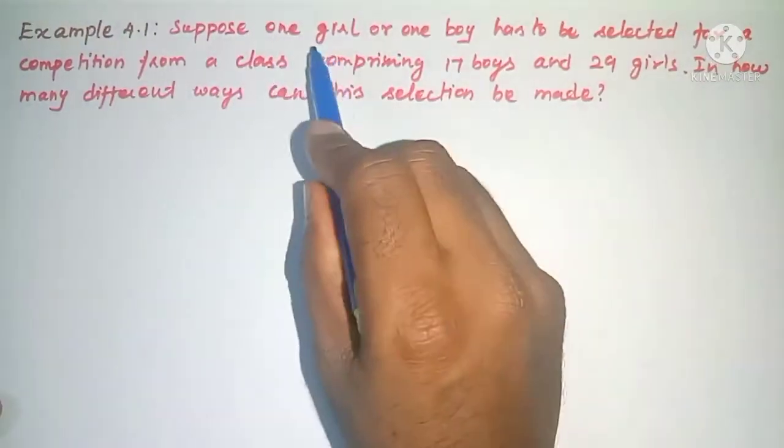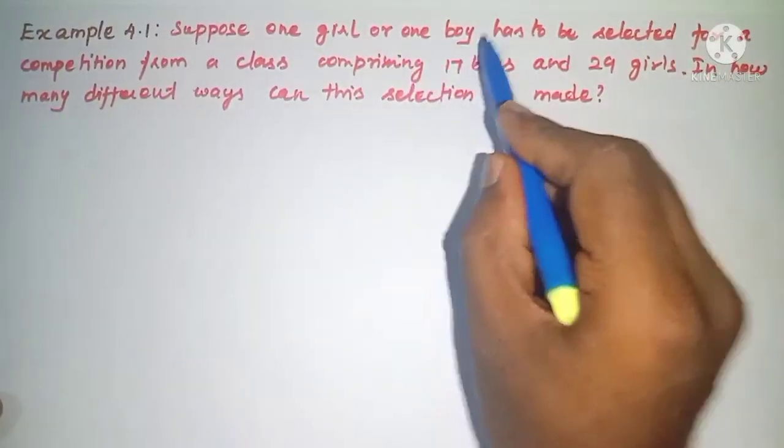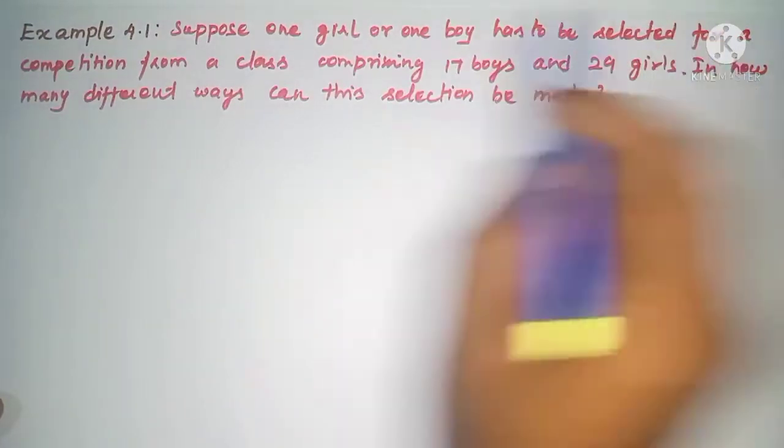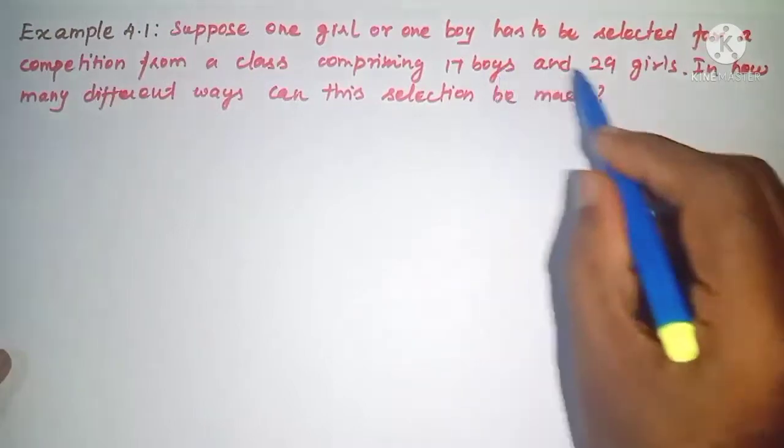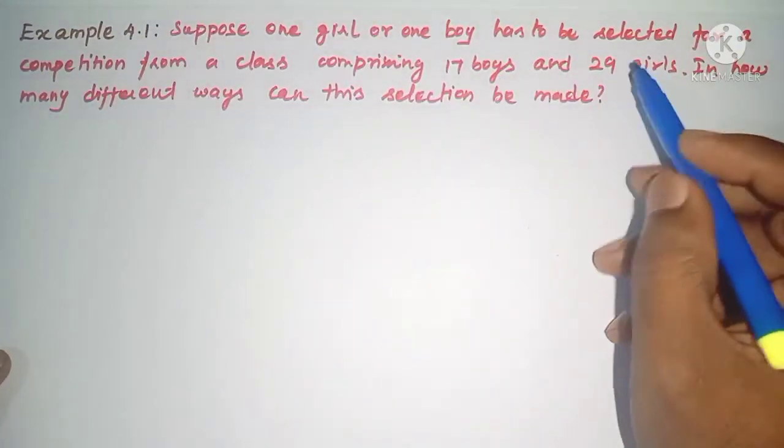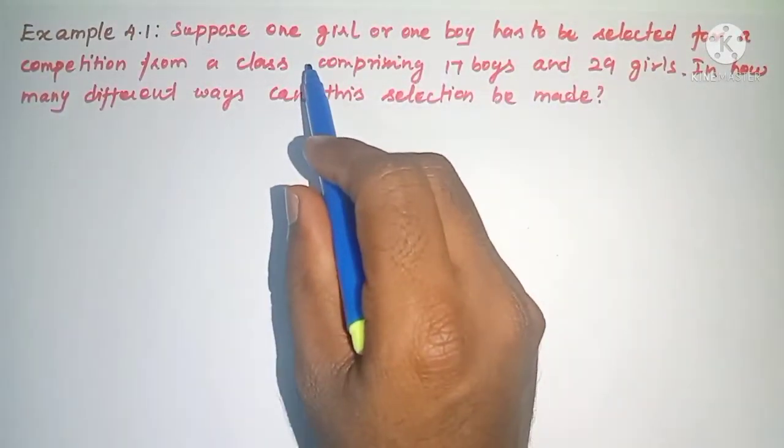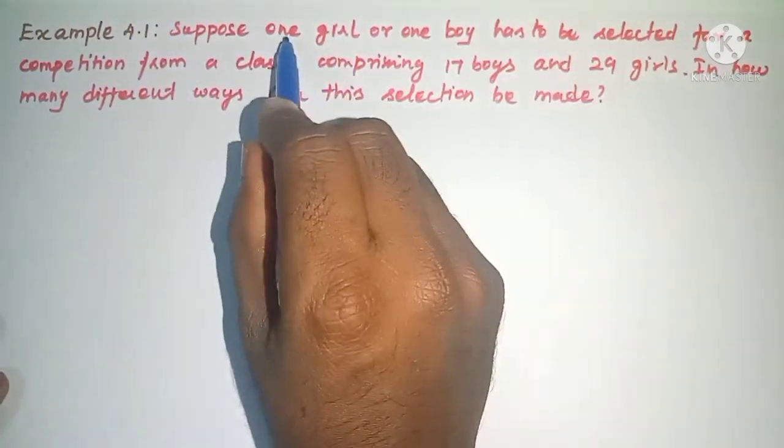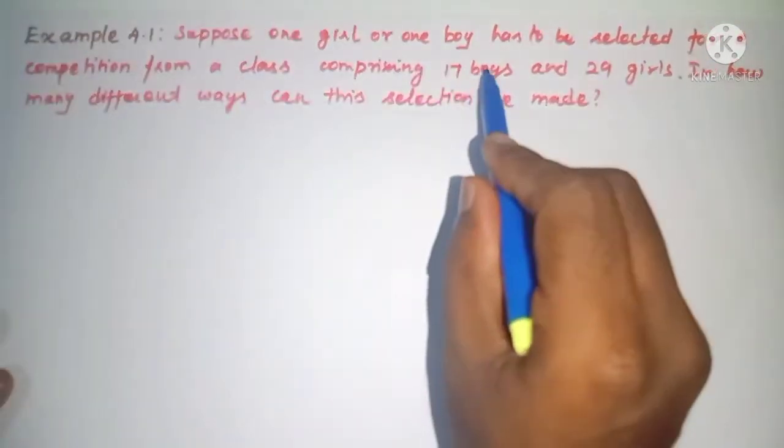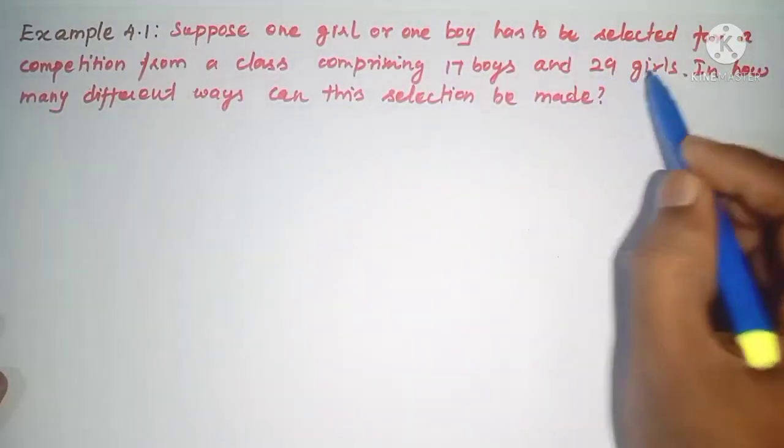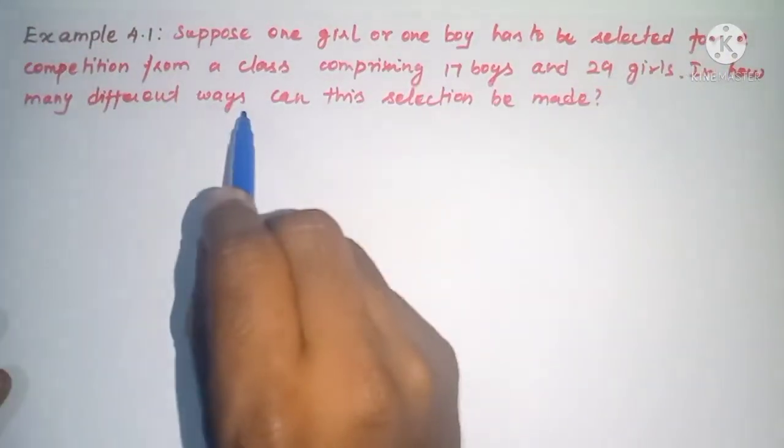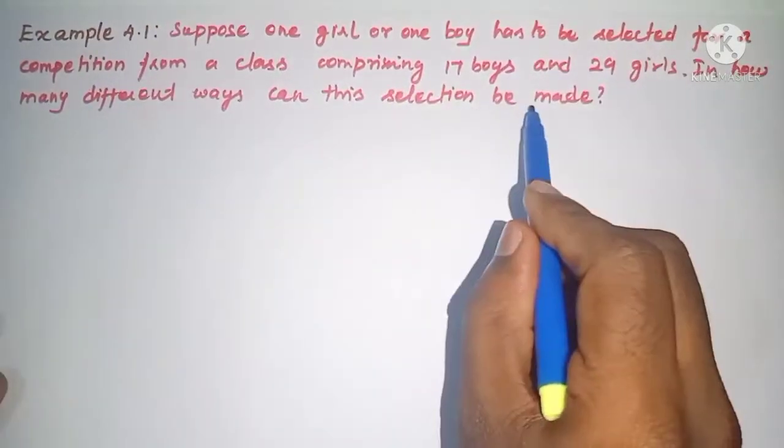Suppose one girl or one boy has to be selected for a competition from a class comprising 17 boys and 29 girls. See, in a competition, one boy or one girl selects. In total, 17 boys and 29 girls. How many different ways can this selection be made?